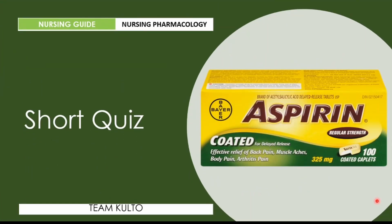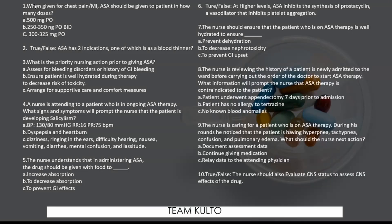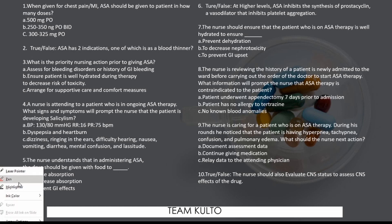Now we're ready for the short quiz — 10 items, 5 minutes. Number one: aspirin should be given in what dose? The answer is 300 to 325 milligrams per orem, and you ask your patient to chew the tablet. Number two: True or false — aspirin has two indications, one of which is as a blood thinner. The answer is true.